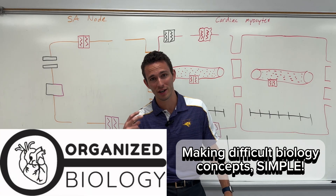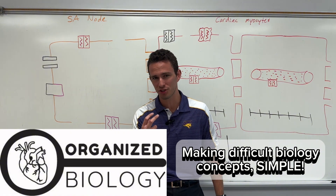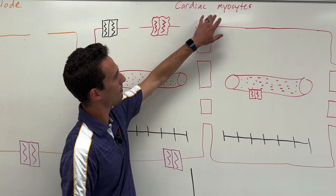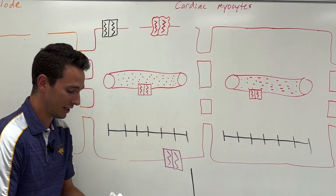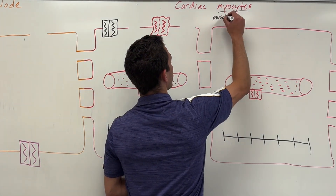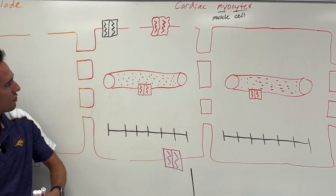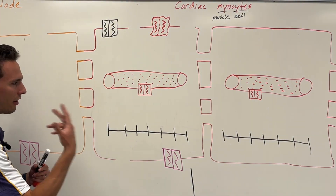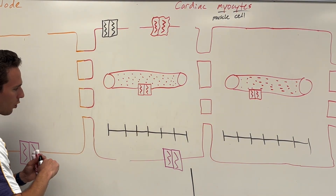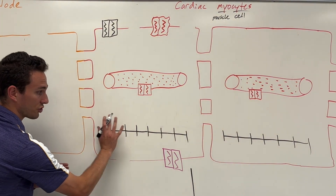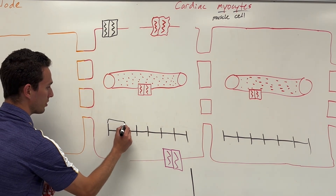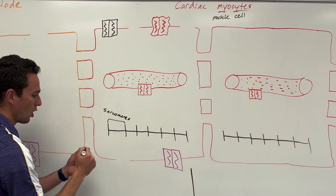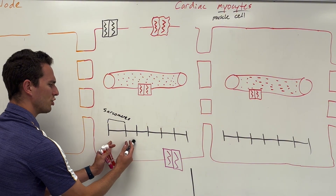Hey everybody, Organized Biology. We're talking cardiac action potentials today. So let's keep the end goal in mind. We have these cells called cardiac myocytes, and myocyte literally means muscle cell. So we want to tell these guys when to contract, when to pump that blood. At the very end of this whole process, we want these little lines — called striations or sarcomeres — which are the contractile unit of your muscles.